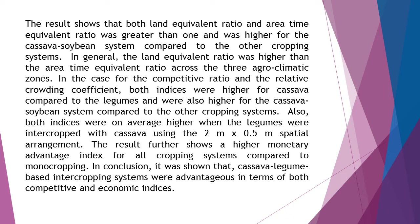In general, the land-equivalent ratio was higher than the area-time equivalent ratio across the three agroclimatic zones. For the competitive ratio and the relative crowding coefficient, both indices were higher for cassava compared to the legumes and were also higher for the cassava-soybean system compared to the other cropping systems.